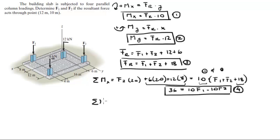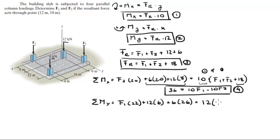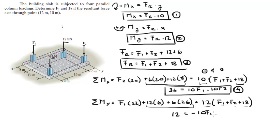The sum of the moments in y is equal to F1 times 22, plus 12 times 6, plus 6 times 26, and this equals FR times 12. So that's 12 times FR, which according to equation 3 is F1 plus F2 plus 18. Multiplying the 12 by 18 and combining F1 and F2 terms, you clean up this equation and get 12 equals minus 10F1 plus 12F2. Call this equation 5.